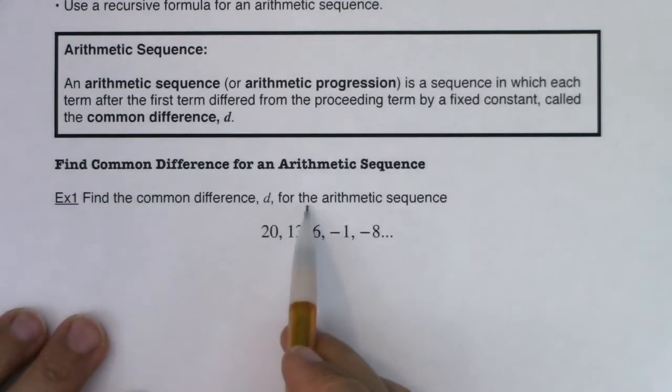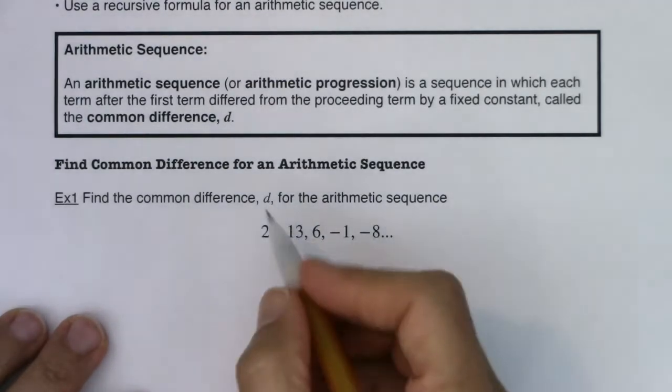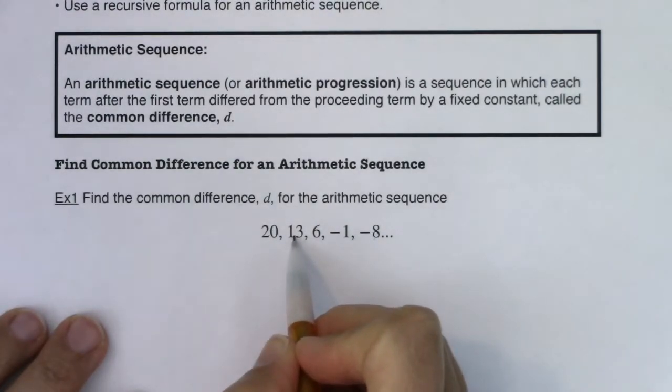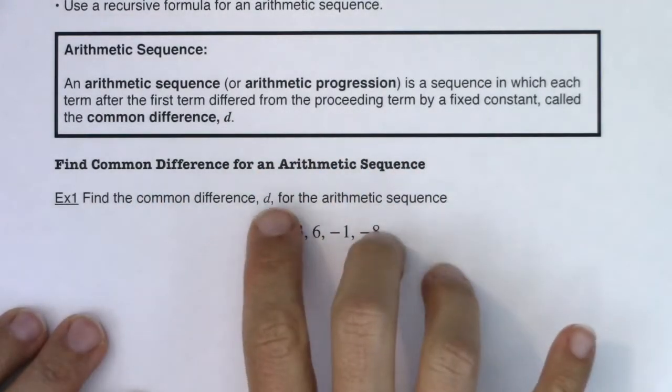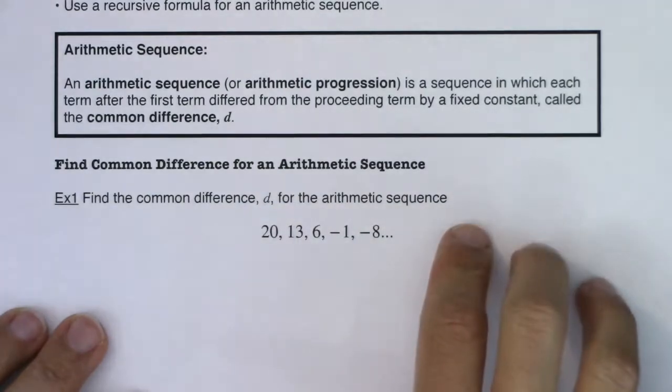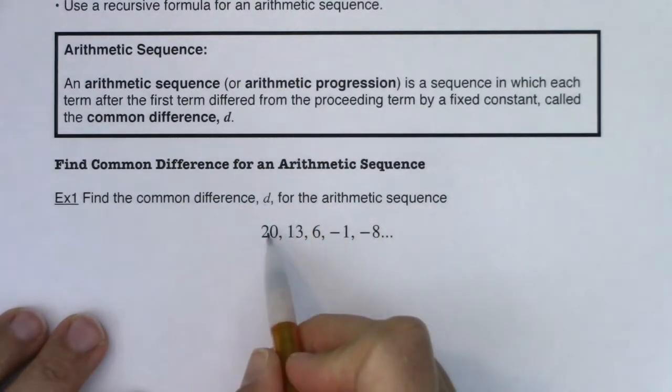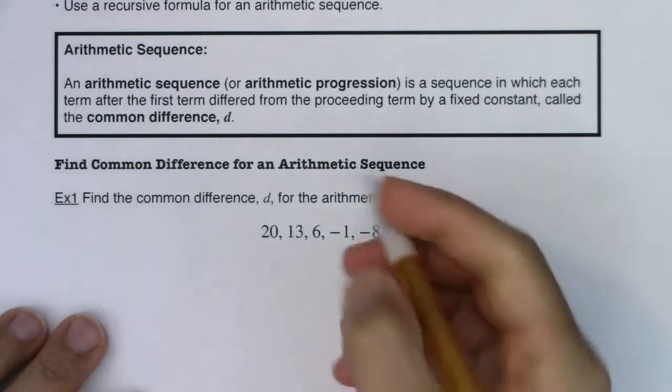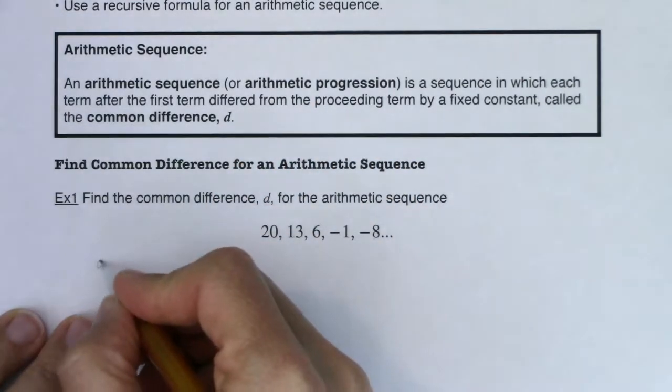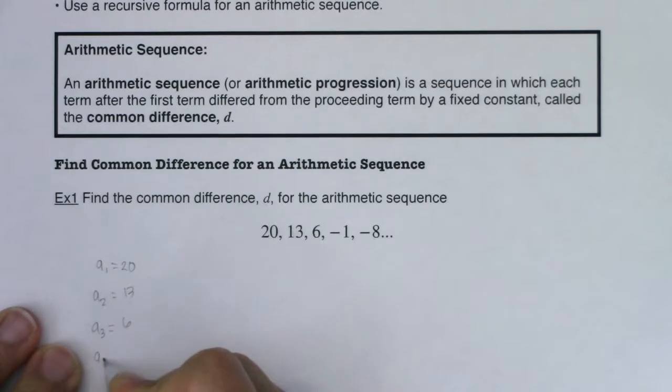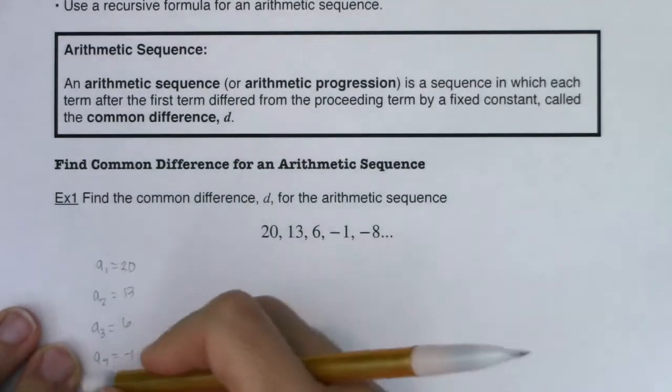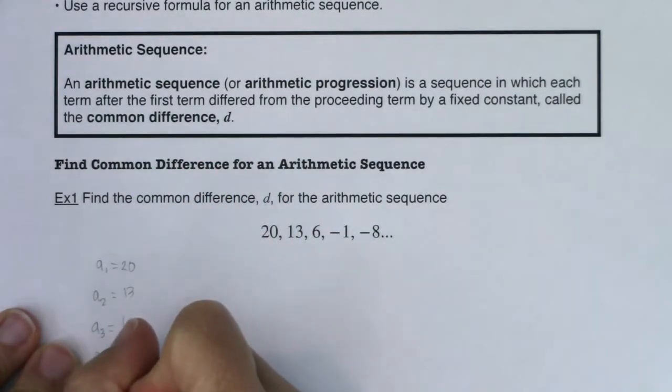It says find the common difference d for the arithmetic sequence 20, 13, 6, negative 1, negative 8. Whenever you want to find a common difference, look at the differences between these successive terms. How do you go from 20 to 13 by either adding or subtracting a number? We'll call it the common difference each time; it just depends on if d is positive, you're adding to get from one term to the other. If d is negative, you're subtracting to get from one term to the other. Let's remember what we picked up in 9.1. I know a sub one is equal to 20, a sub two is equal to 13, a sub three is equal to six, a sub four is negative one, and a sub five is negative eight.